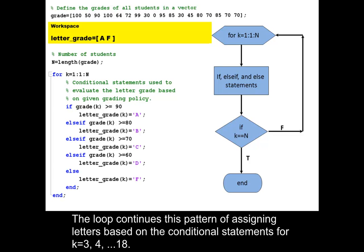The loop continues this pattern of assigning letters based on the conditional statements for k equals 3, 4 to 18.